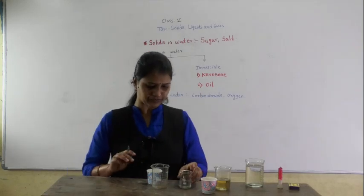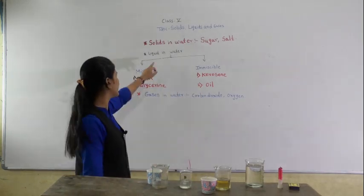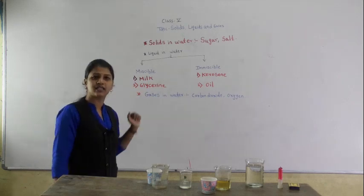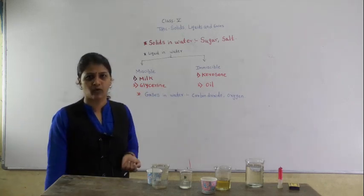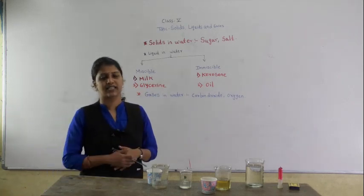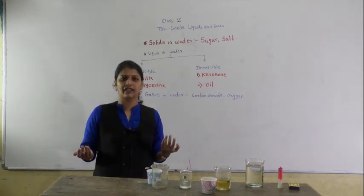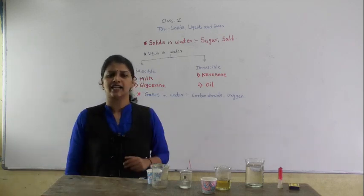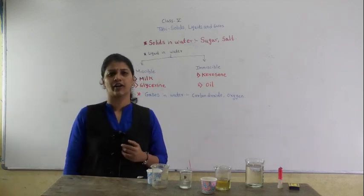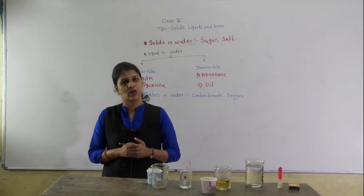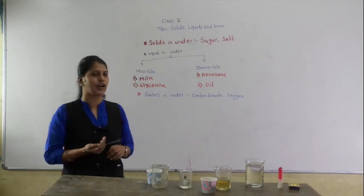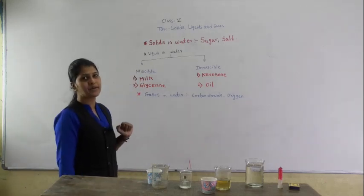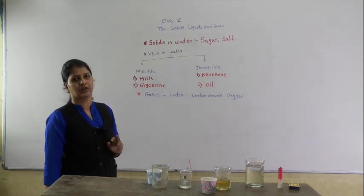Then liquid in water — there are some liquids which can easily dissolve in water. For example, milk can easily dissolve in water. If you add some drops of water in the milk, it can easily dissolve. Such liquids are called miscible liquids.